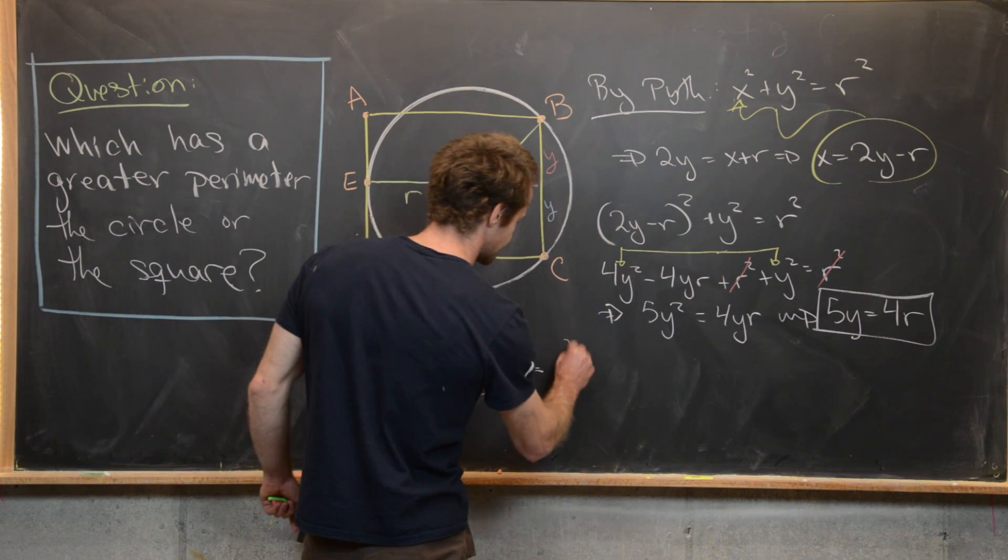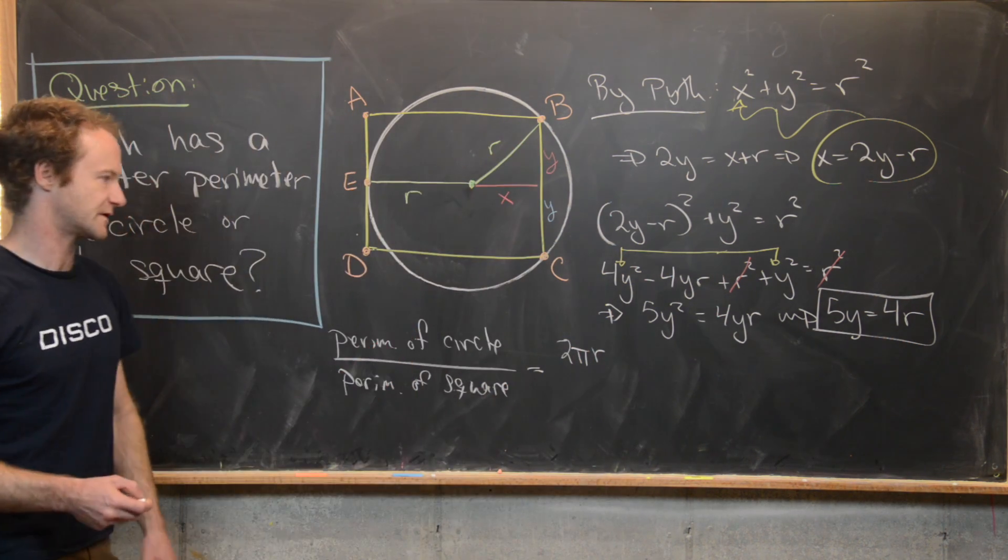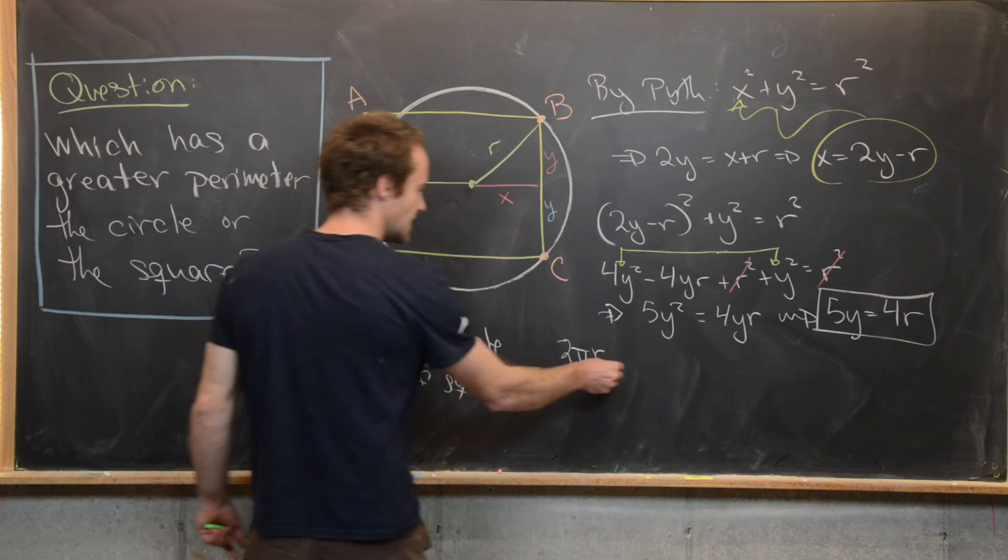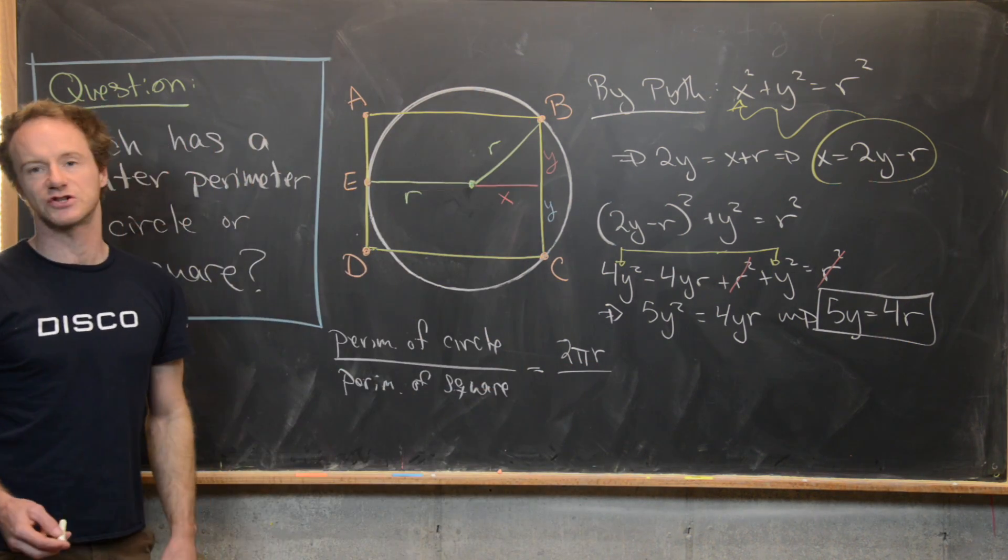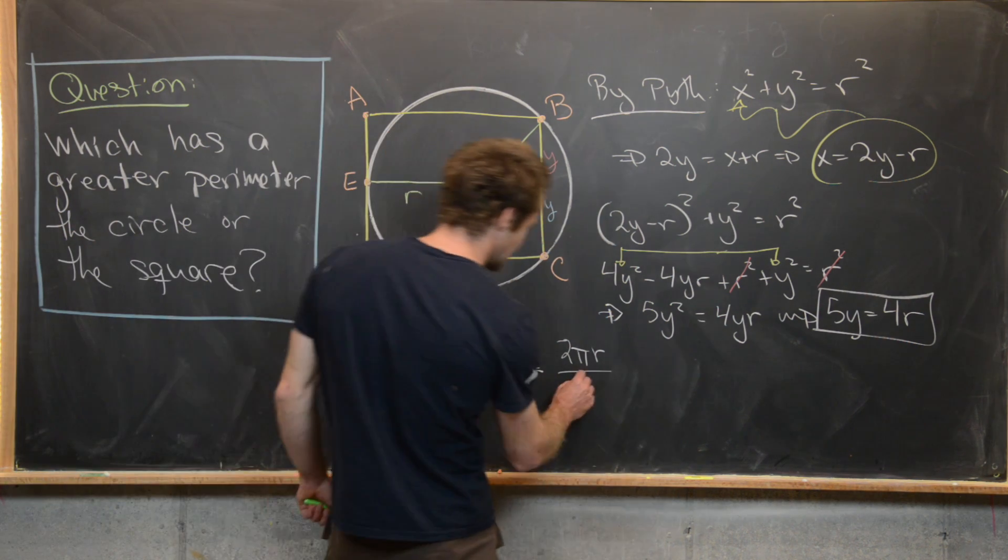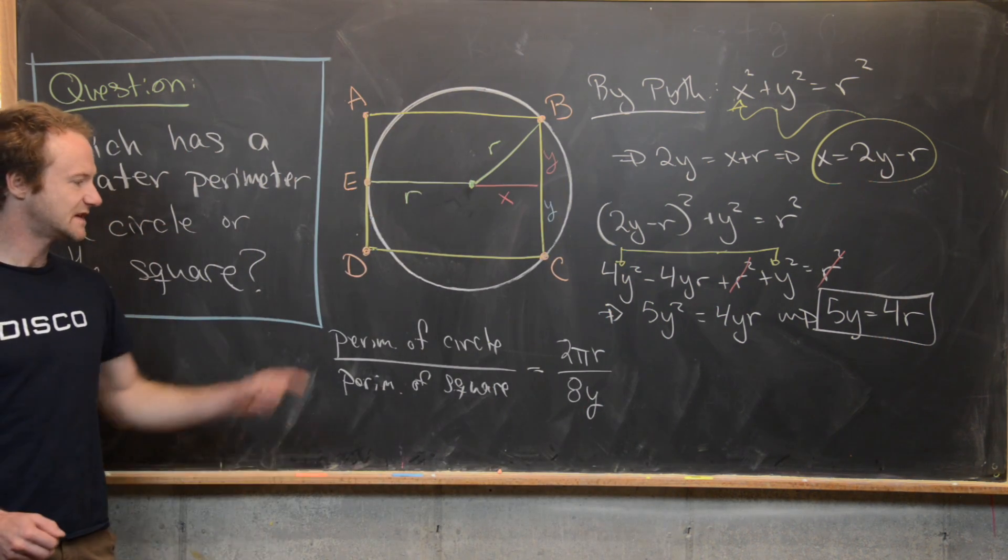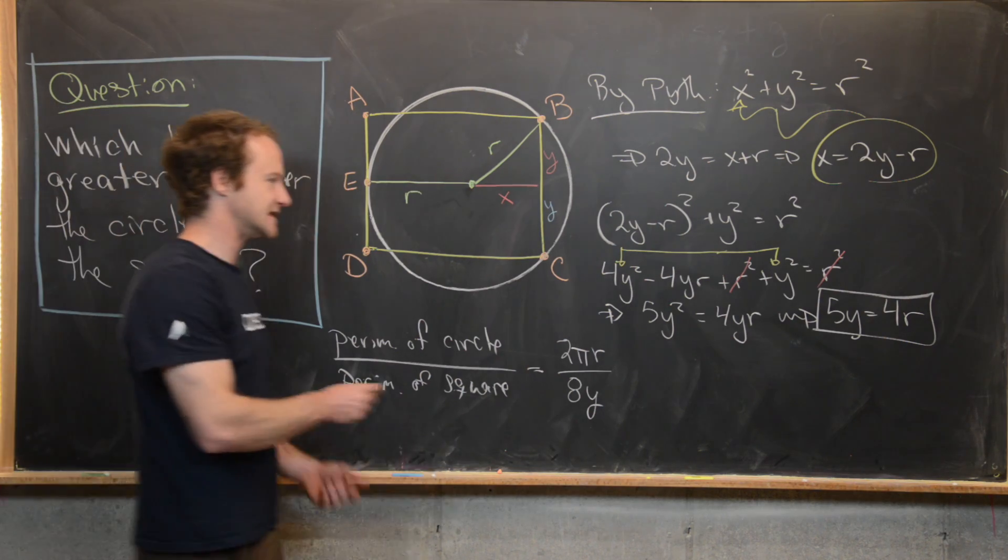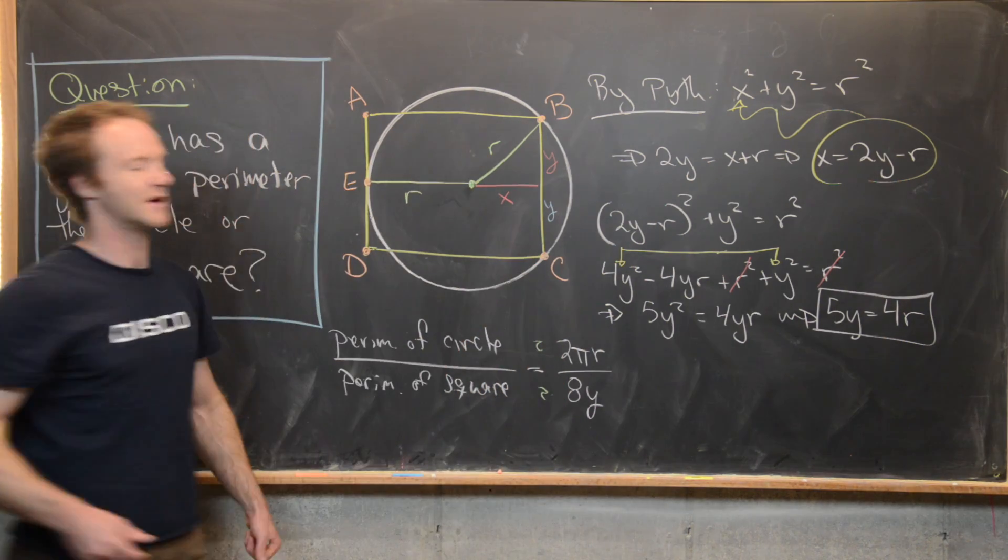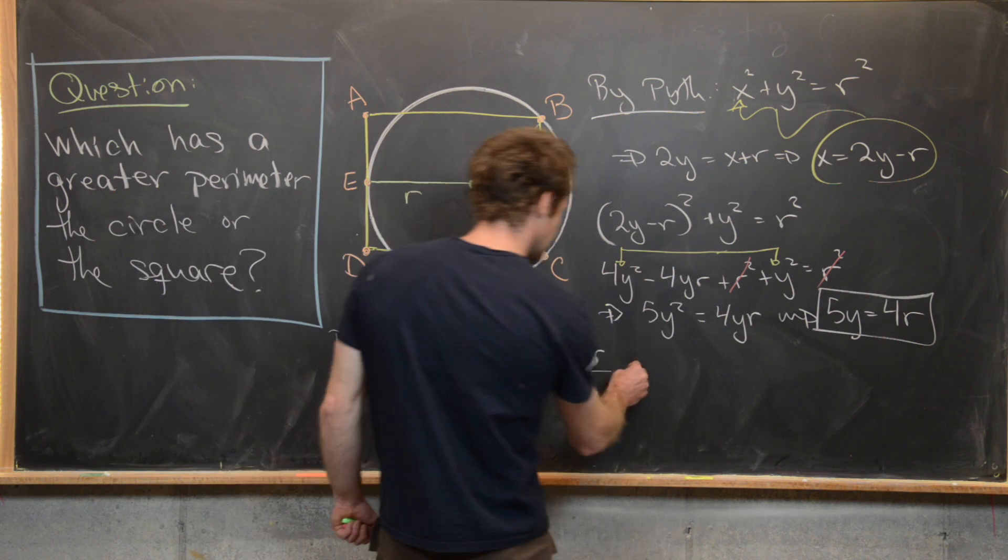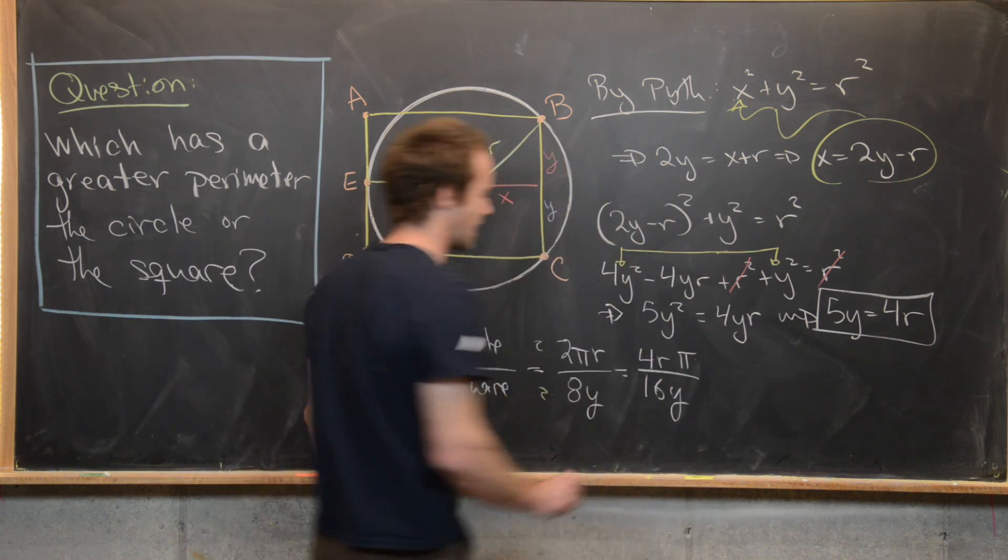So the perimeter of the circle is going to be 2πR from the standard formula for circumference of a circle. Then the perimeter of the square, we'll notice one side has length 2Y. So that's going to be 8Y because we've got four total sides. Now the next thing I'm going to do is take this whole thing and multiply by 2 over 2. That's going to give me a 4R in the numerator. So here we have 4R times π over 16Y.